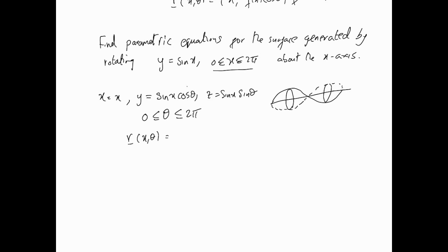x and θ as parameters, so it's r(x,θ) = (x, sin(x)cos(θ), sin(x)sin(θ)). That's the surface represented by this vector function, which can then be used for other calculations.